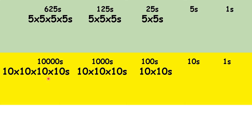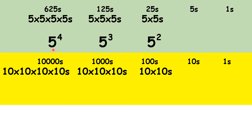So we can start to think about place values in a different way. Rather than thinking of numbers, let's think of powers. So for 25, or 5 times 5, we can say 5 squared — that's 5 times itself. Then for 125, or 5 times 5 times 5, we can say 5 cubed. And for 625, or 5 times 5 times 5 times 5, we can say 5 to the power of 4.